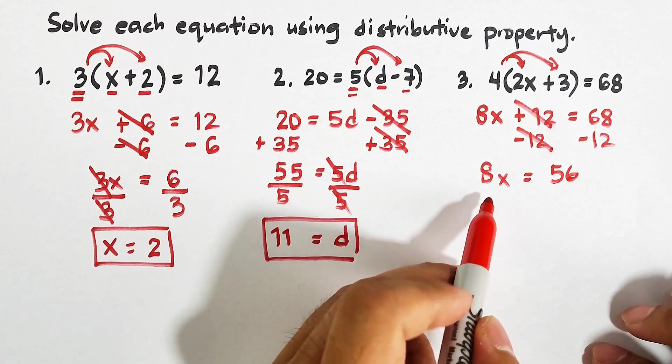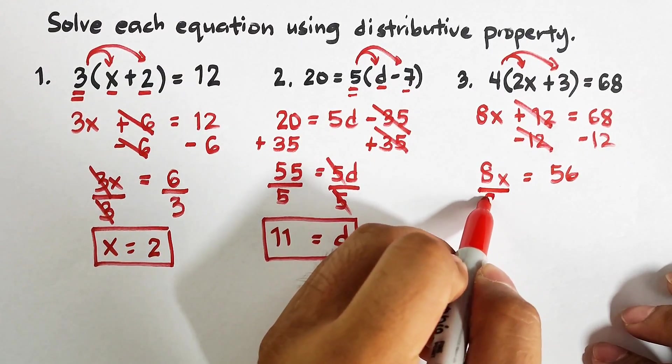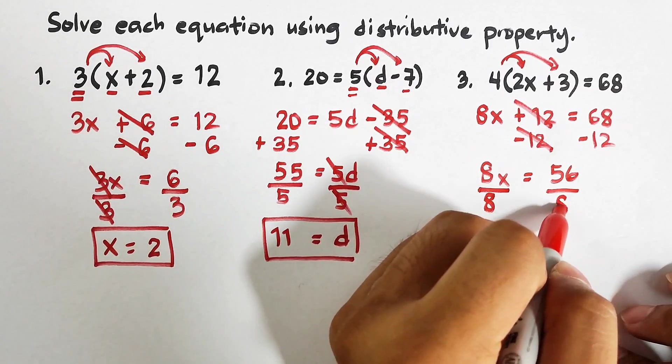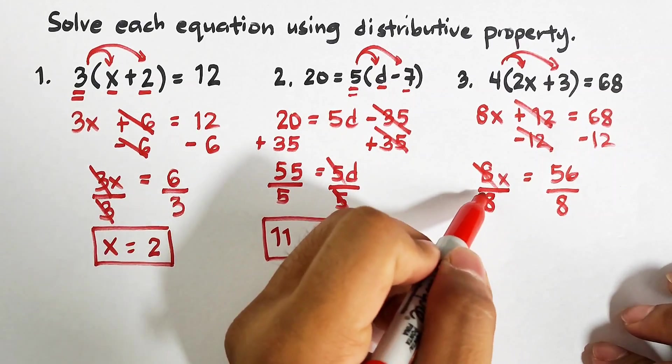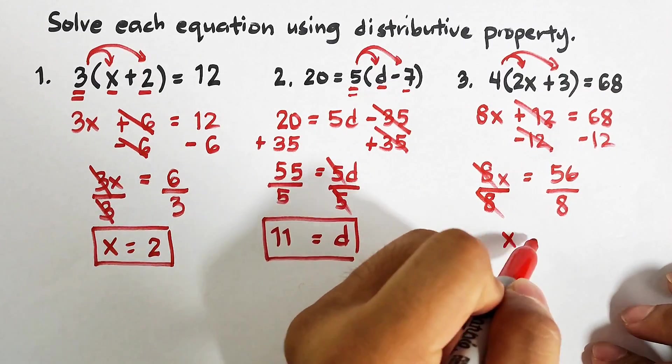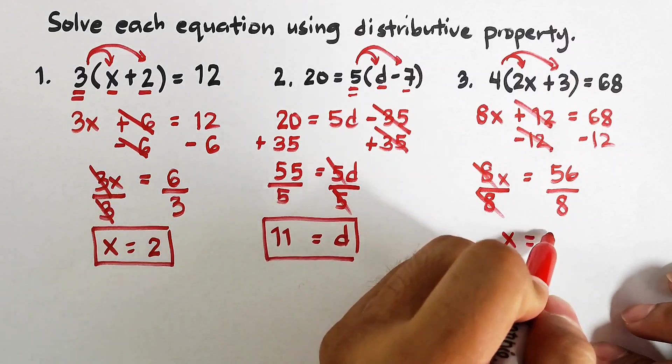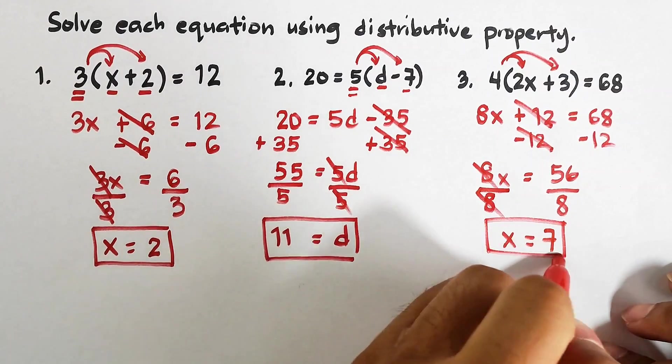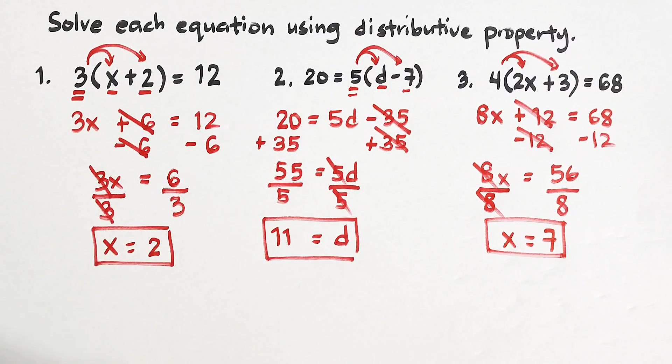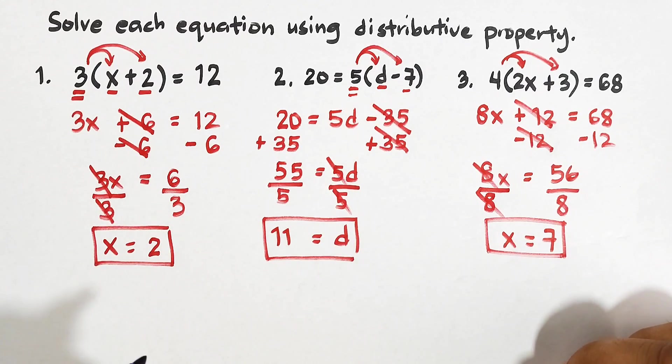You have x is equal to 56 divided by 8, that would be 7. Now guys, as you can see, we are done in solving three equations using the distributive property. And as part of our routine, we will try to solve another example for you to answer after watching this video. Please do comment down below. Let's try this equation.